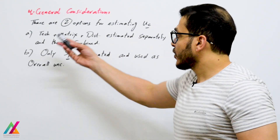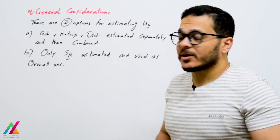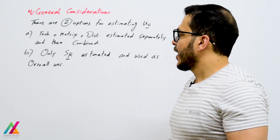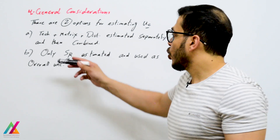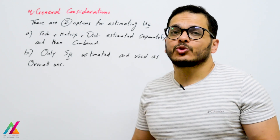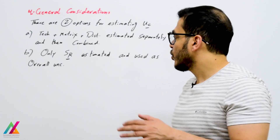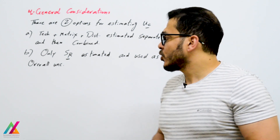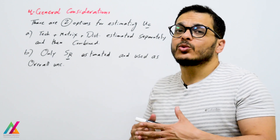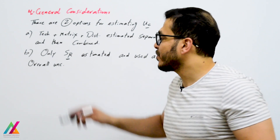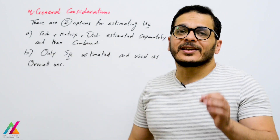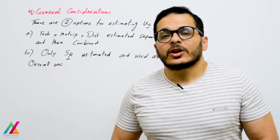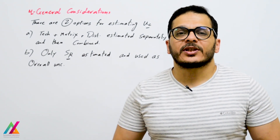Finally, there are two options for estimating measurement uncertainty. The first option estimates technical, matrix, and distributional uncertainties separately and then combines them. The second — and preferred — option uses only the standard deviation of reproducibility from technical uncertainty as the overall uncertainty, because it already encompasses all sources of uncertainty including matrix and distributional. This concludes today's lecture. Thank you and see you in the next lecture.